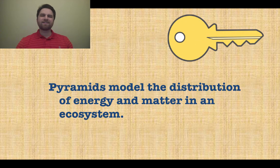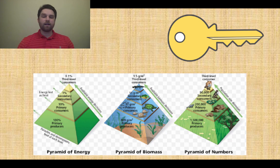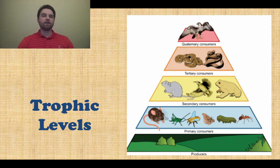Your next key concept is that pyramids model the distribution of energy and matter in an ecosystem. There are three main types of pyramids we're going to look at: the pyramid of energy, the pyramid of biomass, and the pyramid of numbers. Let's get right into it.